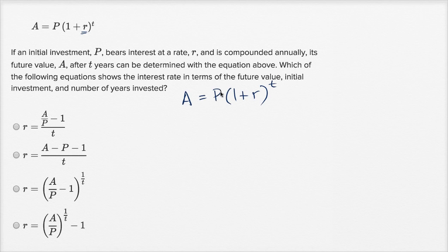The first thing I can do is get the P onto the left-hand side by dividing both sides by our initial investment. So if I do that, and let me swap the sides too, then I get one plus R to the t power is equal to our future value divided by our initial investment.